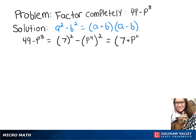So now, using our formula, we can rewrite that as 7 plus p to the 4th times 7 minus p to the 4th.